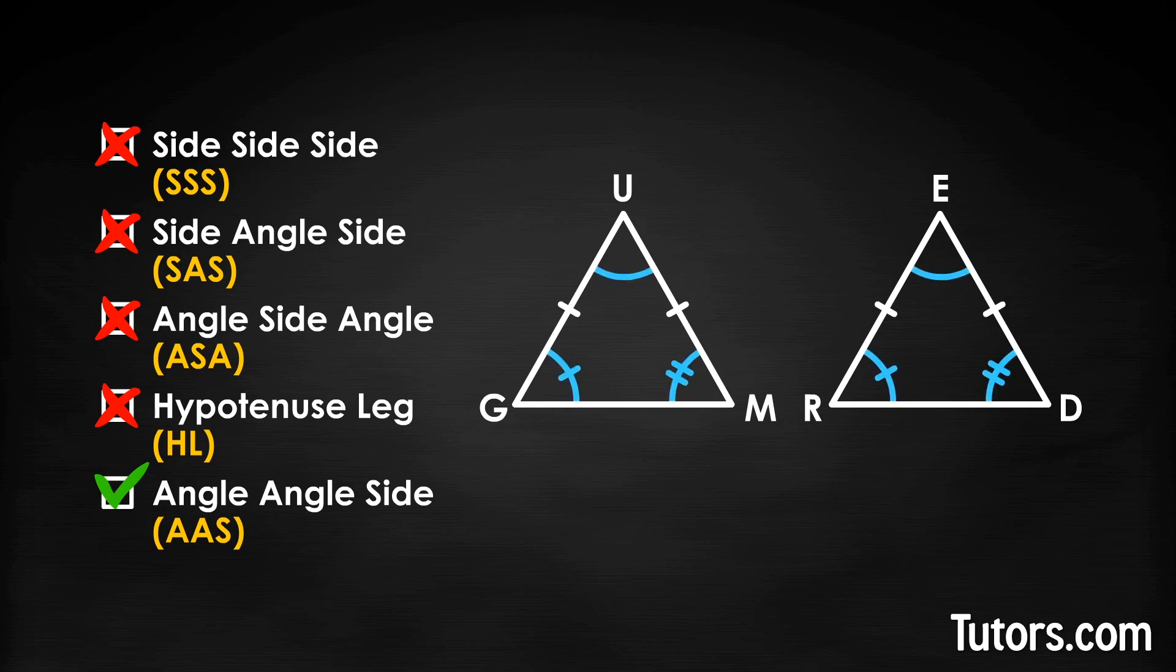Here is the formula. 180 degrees minus angle G minus angle M equals angle U. Solving for angle U now gives you two angles with an included side. So, where once we had angle-angle-side, we scooted around the triangle and turned it into angle-side-angle, which is already a postulate.